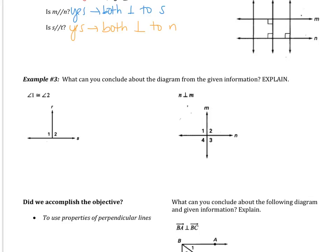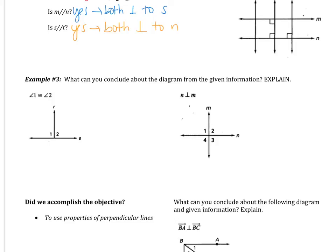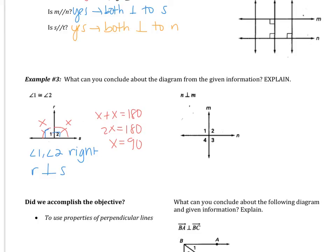Example three says: what can you conclude about the diagram from the given information? For the first one, we're told that angles one and two are congruent, and you know that they're also a linear pair. Let's call angle one x — if one is congruent to two, then two is also x. If they're a linear pair, they're supplementary: x plus x equals 180, so 2x equals 180, and x equals 90. That means both are right angles, so line R is perpendicular to line S. This work is sufficient as the explanation.